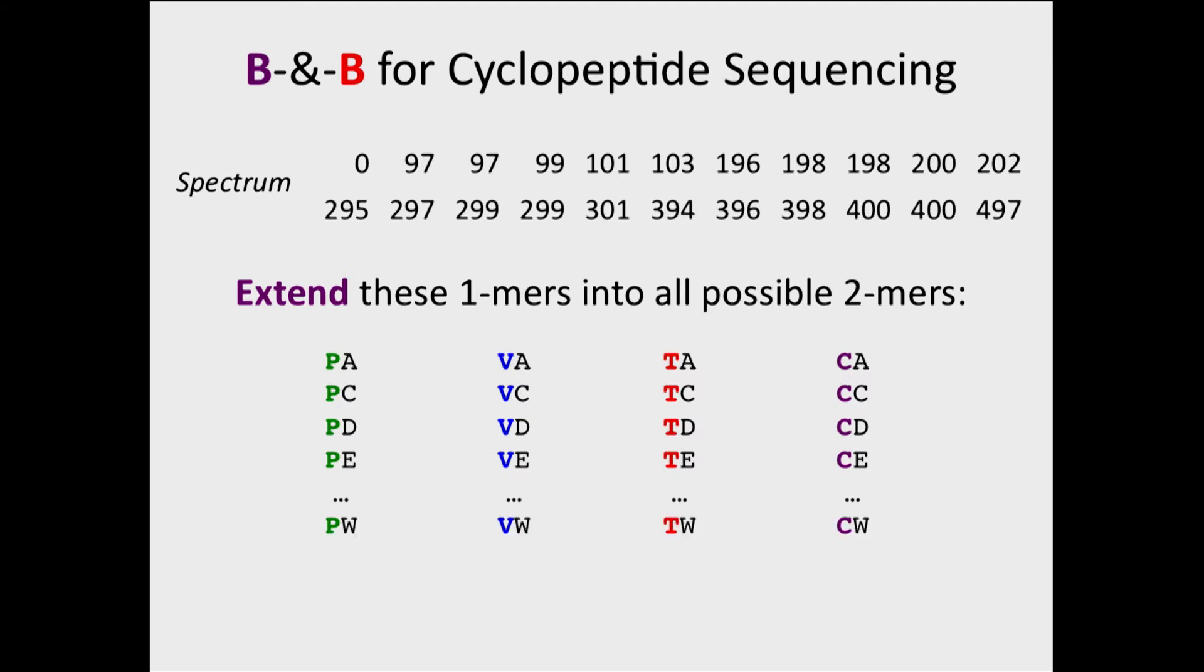All right, so we started with four, and we're going to now multiply that by 18, because we're adding each possible amino acid onto each of these four, and we're left with 72. So we want to know how we can trim this list, right? So we've done our branch step, and now we need to do our bound step and bring it back.